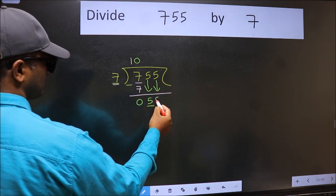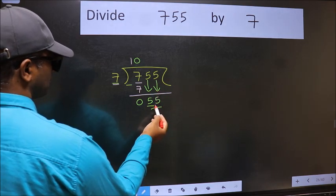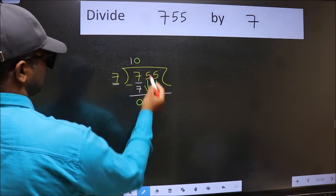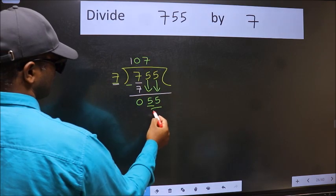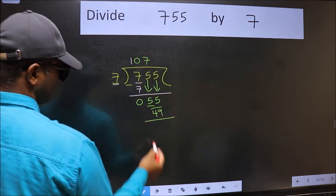Now with 55, the number close to 55 in the 7 table is 7 sevens, which is 49. Now we subtract and get 6.